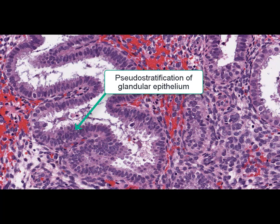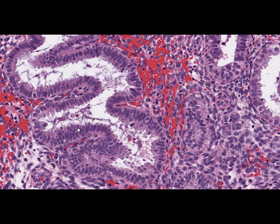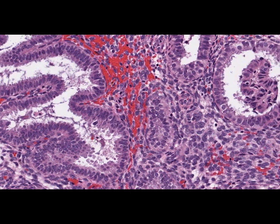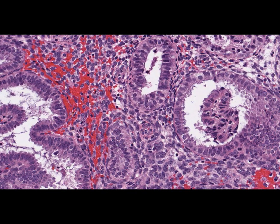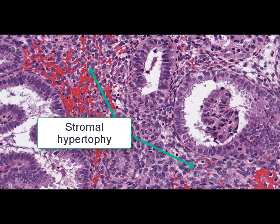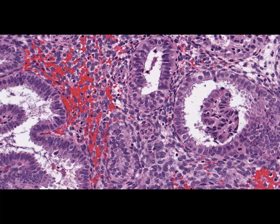Some changes are also identified in the stroma: hypertrophic changes and some features of chronic inflammation, meaning evidence of chronic endometritis, manifested by diffuse lymphocytic and plasma cell infiltration.